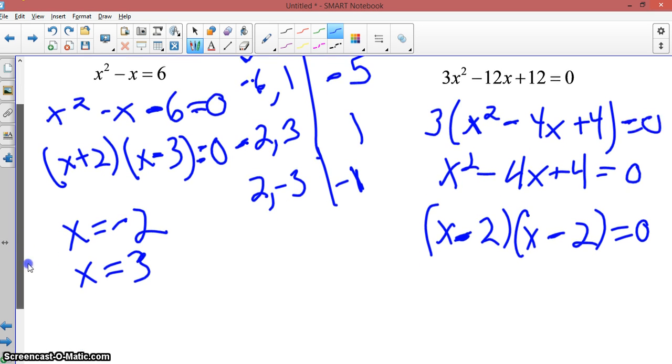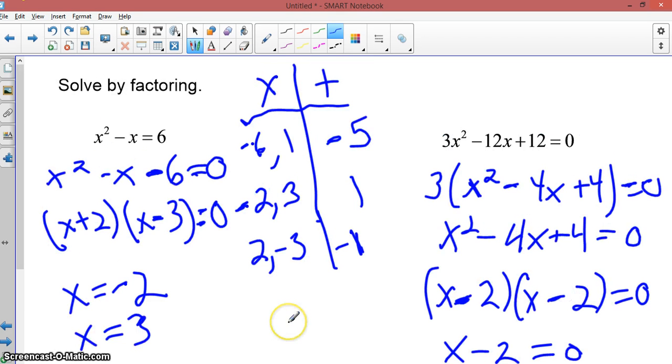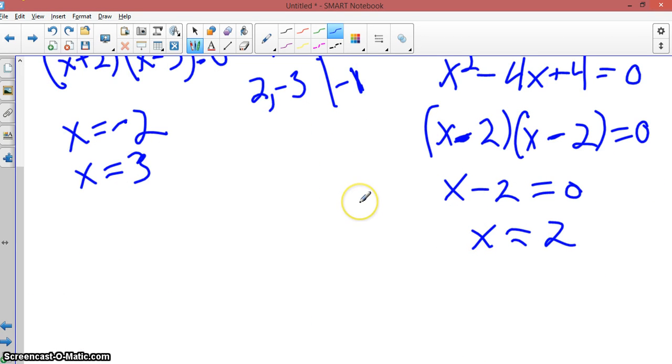Same factor twice means that actually you only have one answer. You set x minus 2 equal to 0. And you get x equals 0, or excuse me, 2. Boom. Sorry. Had some technical difficulties, had to pause it. But anyway, there you go. One answer, and we're out of time.